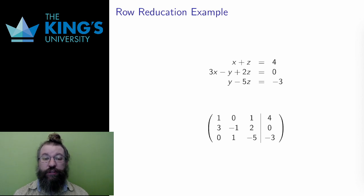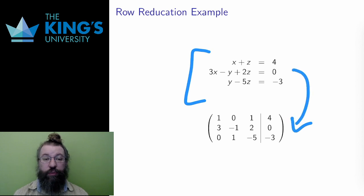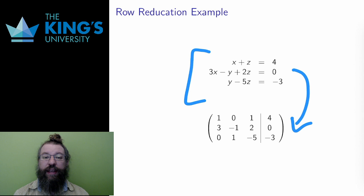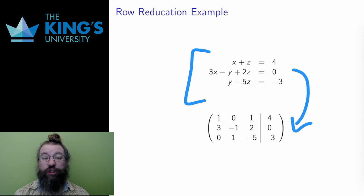This is the first system. I translate it into a matrix, as I showed last week, using zeros for the variables that didn't show up in the equation, such as x in the last equation. Now I want leading ones. Happily, the first row already has the leading one, so I can work with that leading one.